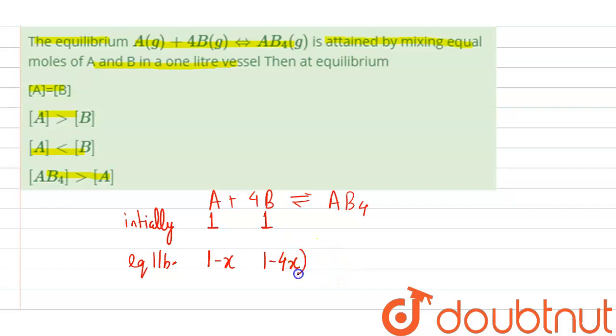So because in B more value is subtracted, the moles of B will be less than A. The moles of B will be less than A because from the equal value more value is subtracted and the result will be less.